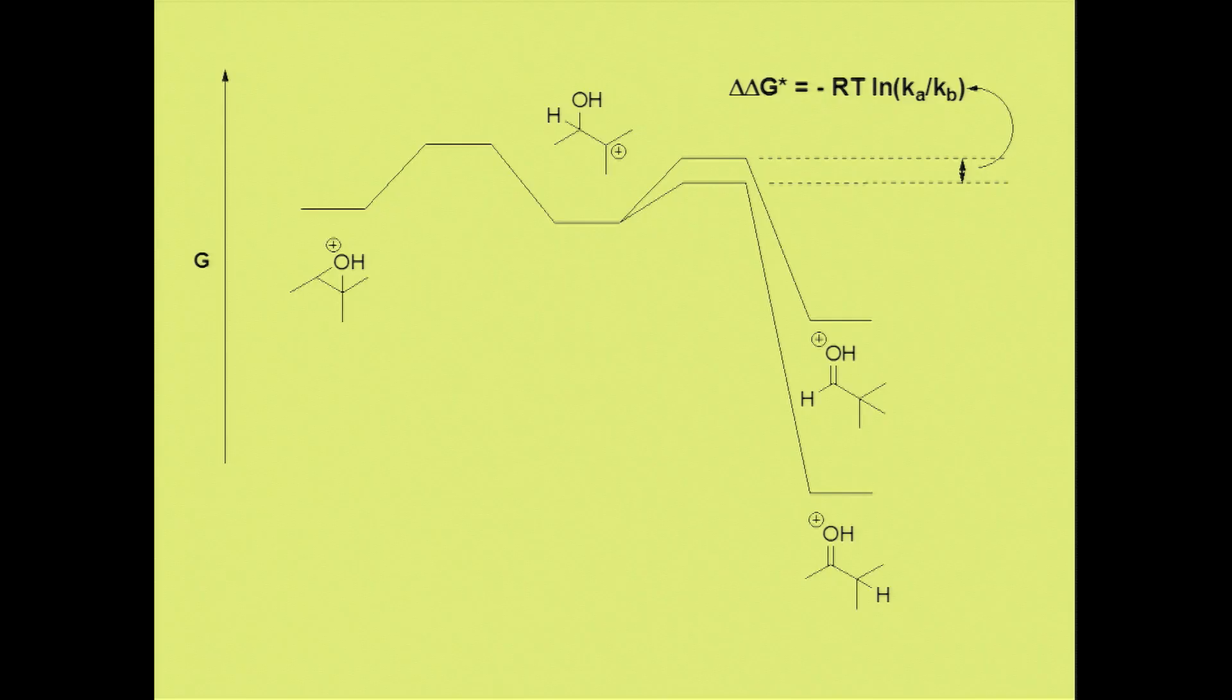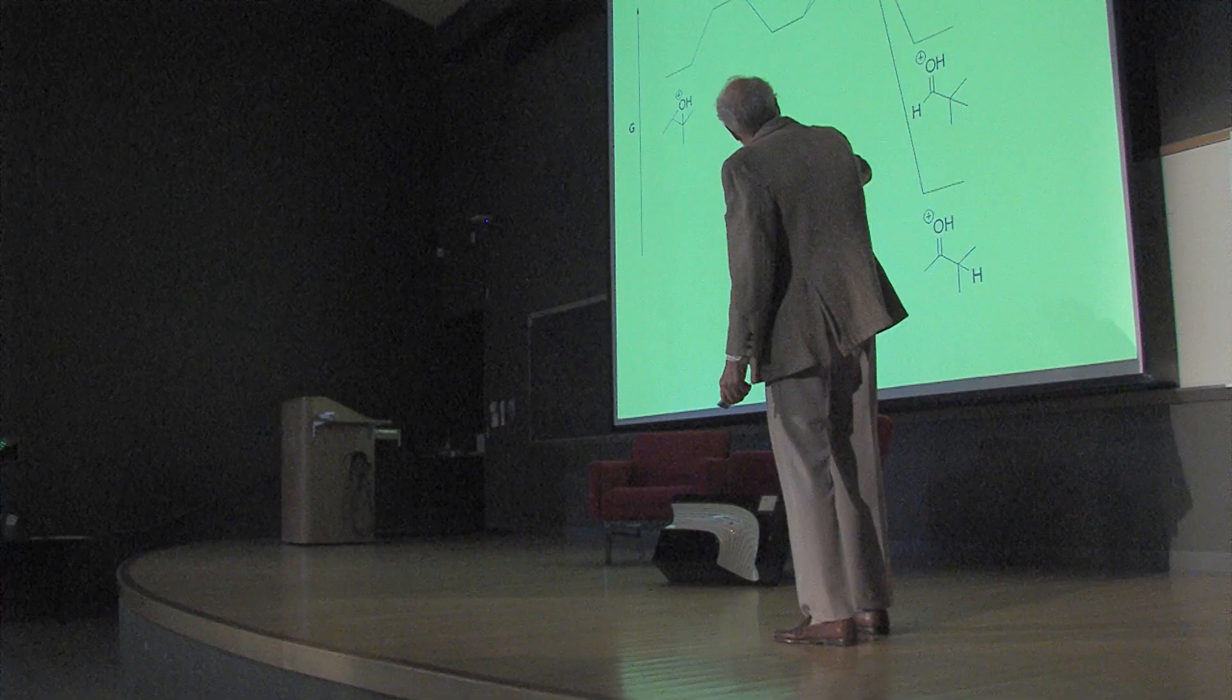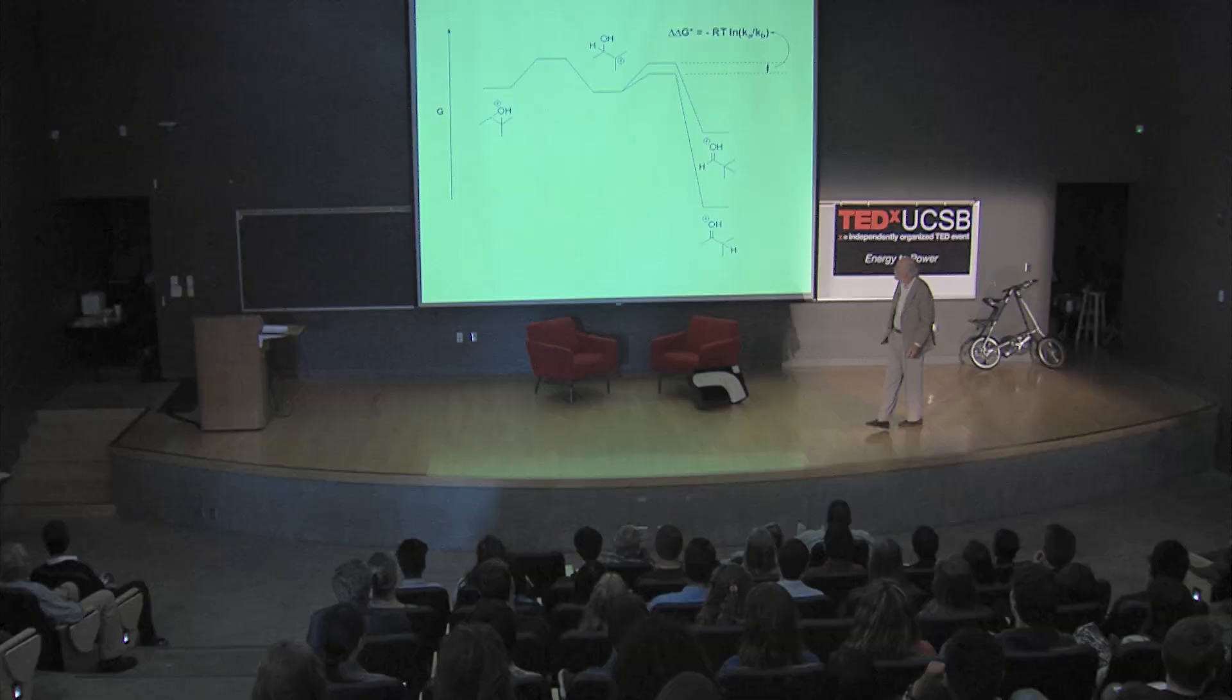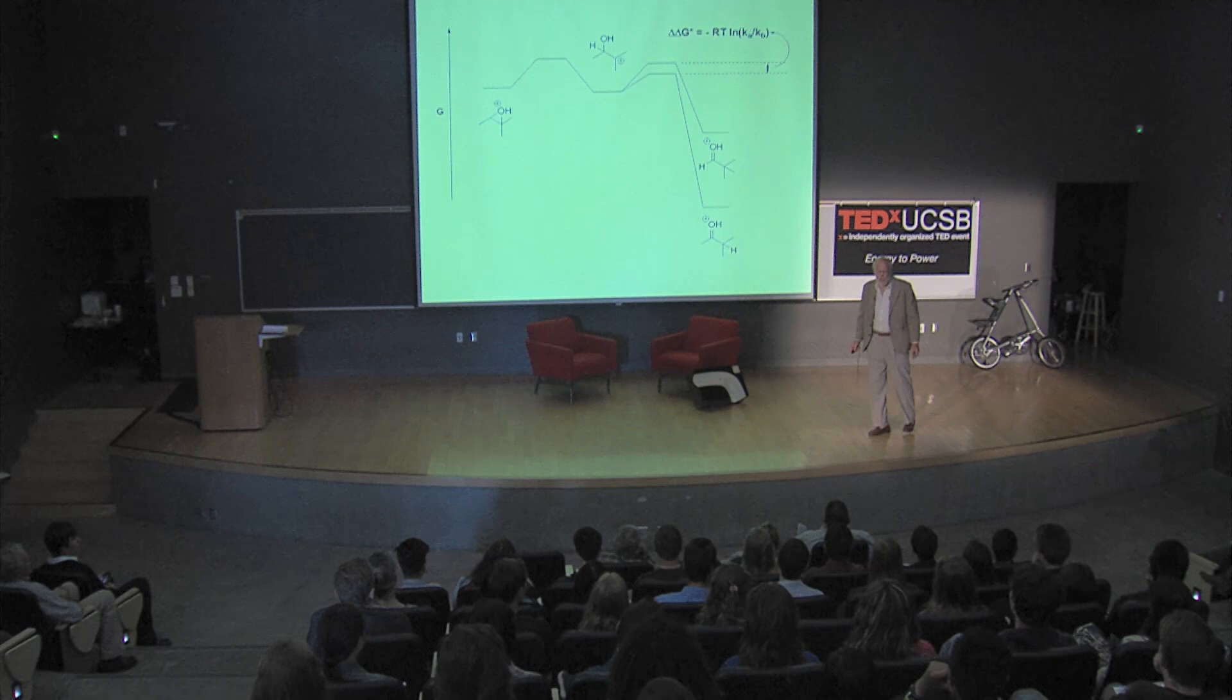We can predict that using the Evans-Polanyi principle, where the more stable product oftentimes has the lower energy transition state. If you can calculate the energies of these transition states, we can figure out the product ratio. The ratio of the two products is given by this very simple equation knowing delta delta G dagger, the difference in energy between the two transition states. This is called transition state theory and has stood the test of time for 70 or 80 years.